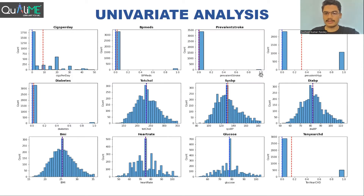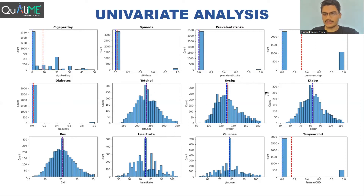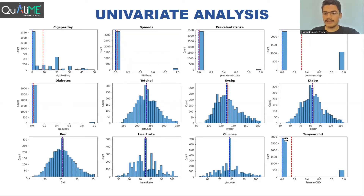Most people do not have any history of prevalent stroke, while very few do. A good number of people have a history of hypertension. Most people are not diabetic. Total cholesterol, systolic BP, BMI, heart rate, and glucose are all continuous variables and are very much normally distributed. Looking at the target variable — 10-year CHD risk — most people do not have the risk of future coronary heart disease, while only a few do, so we will need to deal with the class imbalance problem later.